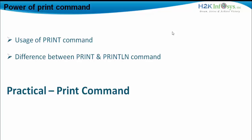We will also see the difference between the print and the println command. When we use system.out.print, it prints in the same line and the cursor does not move to the next line. Whereas when we use system.out.println, the cursor prints a result in a line and then moves to the next line — that is what the println command does.